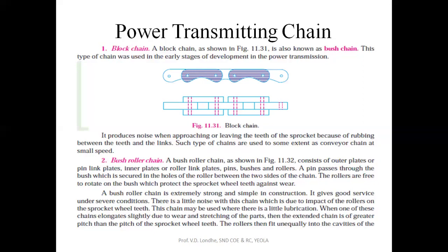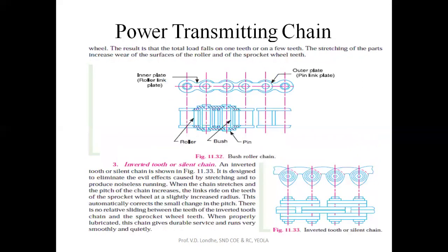There is little noise compared to block chain due to impact of rollers on sprockets. This chain requires some lubrication. When there is elongation due to friction, there will be slack formation as the pitch will not be maintained. This is the drawback of bush roller chain.